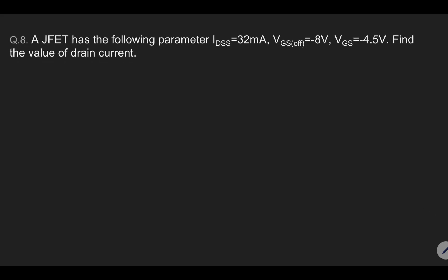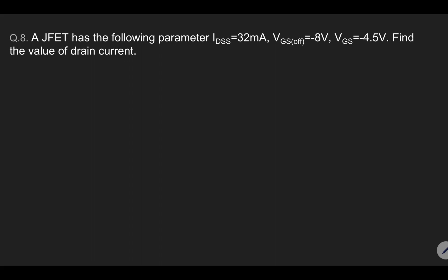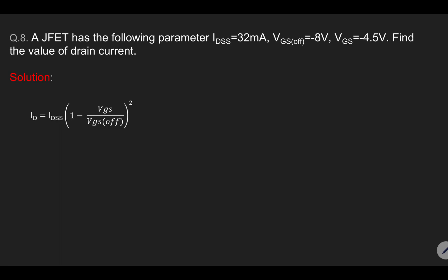Let's move to the next question. For a junction field effect transistor, we are given the maximum drain current and need to find the drain current. Substituting the values: ID equals 32 into 10 to the minus 3, times 1 minus VGS (given as minus 4.5 volt) divided by VGS(off) (given as minus 8 volt), squared. The value comes out to be 6.12 milliampere.